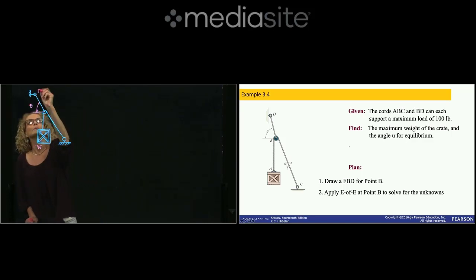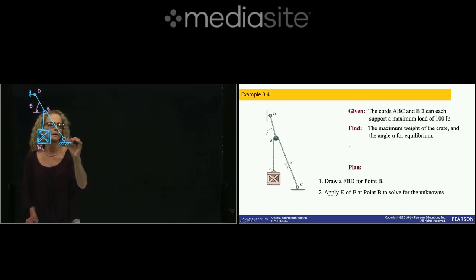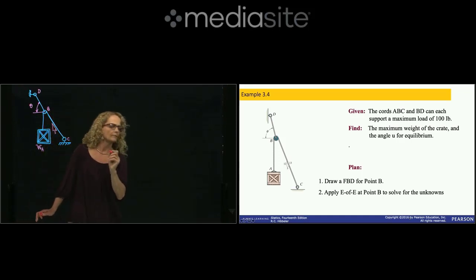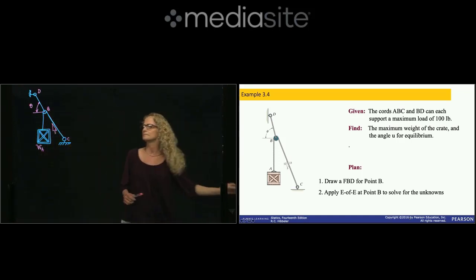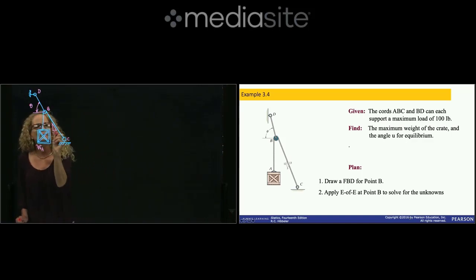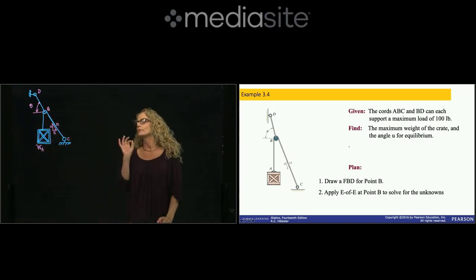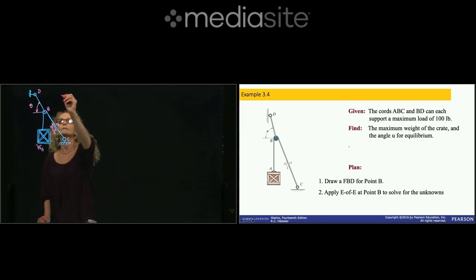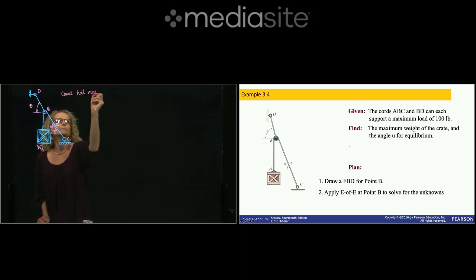Let me put here the names of the points. This is weight A, and this is point C. They give us also this angle right here. This angle is 5, 12, and therefore this is 13. They want us to find the maximum weight that this configuration can hold if the cords are able to hold a maximum of 100 pounds.